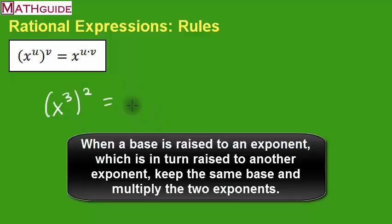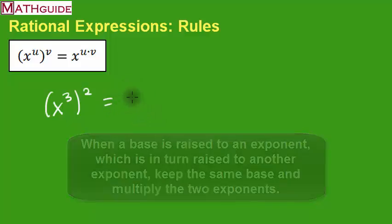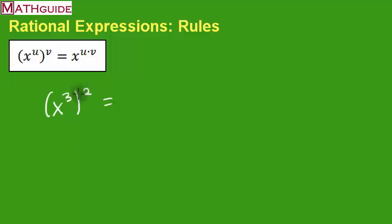You know, it really just means I've got x cubed times x cubed, but the shortcut says we just multiply those two exponents together. So that's 6. It's x to the 6th.